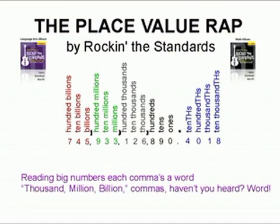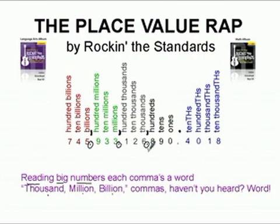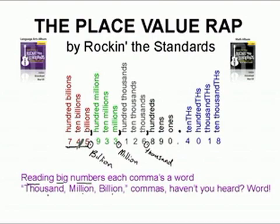Reading big numbers, each comma's a word — thousand, million, billion, haven't you heard? When you're reading a big number like the one you see here, the simple way to understand how to read it is that each one of these commas is actually a word that you say. It's thousand, million, billion — notice it does not say thousands, millions, billions. We say the word thousand when we come to that comma, the word million, and the word billion. So to read this big number, we say 745, then we say this comma as the word billion — 745 billion.